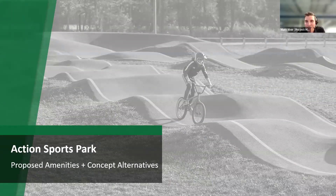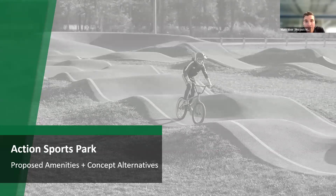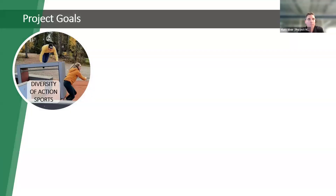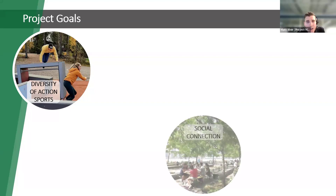The Action Sports Park is the hallmark recommendation of the Wheaton Regional Park Master Plan. The goals for this project start with providing a diversity of action sports — this is not just for skateboarding, but also facilities for biking, running, jumping, hopping, and climbing. It also provides spaces for social connection, not just for thrill seekers who want to do the action sports, but also places for families and friends to watch, spectate, and enjoy a nice view.